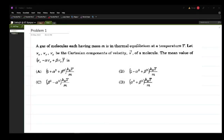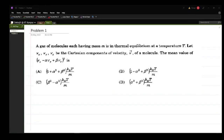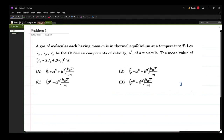Welcome to this video. Today we will look at some problems which were given in JAM exams. The first problem is from JAM 2010. The problem states that a gas of molecules, each having a mass m, is in thermal equilibrium at a temperature T. Let vx, vy, and vz be the Cartesian components of velocity vector v of a molecule.